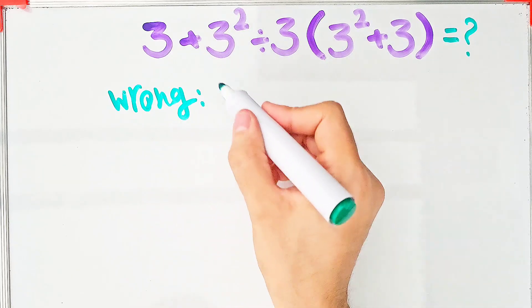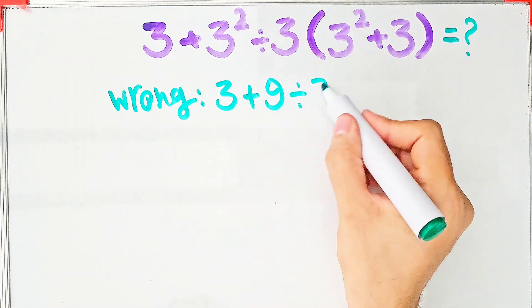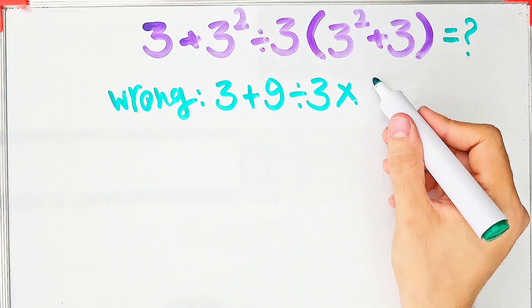some people solve this question like this: 3 plus 9 then divided by 3 times 9 plus 3. 9 plus 3 equals 12.